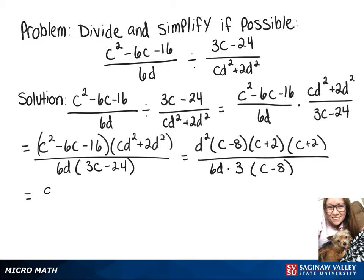We can rewrite this as d over d times c minus 8 over c minus 8 times d times c plus 2 times c plus 2 over 6 times 3, which is 18.